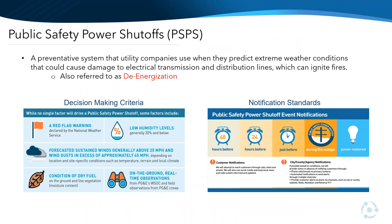To start, I wanted to provide a definition from the CPUC website of public safety power shutoffs — they refer to it as a preventative system that utility companies use when they predict extreme weather conditions that can cause damage to electrical transmission and distribution lines, which can ignite fires. Public safety power shutoffs, also known as de-energization, became practically a household name in California following 2019's fire season, where widespread de-energization events, mainly in PG&E territory, led to over three million people in California losing electricity, with many out of power for several days.